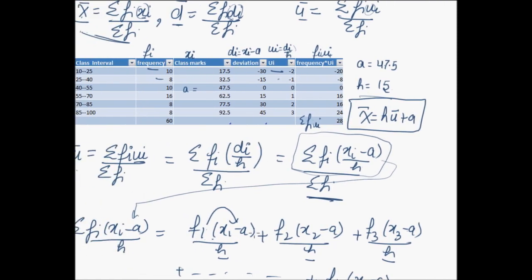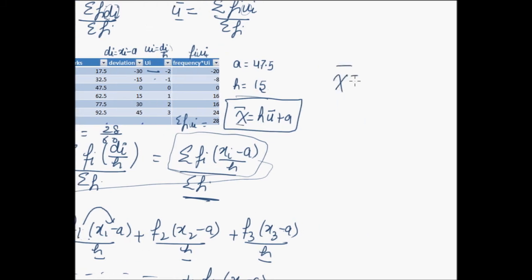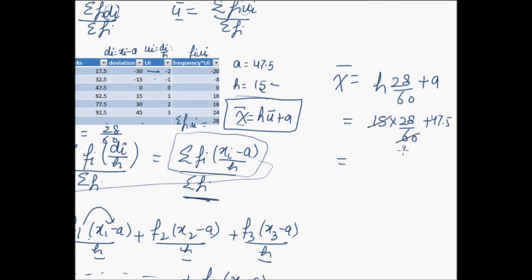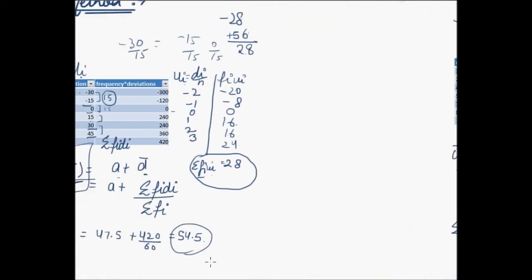So with the simplified version of this table and calculating u bar, that is u bar can be calculated easily as summation fi*ui over summation fi, that is 28 over 60, we can calculate mean. Mean will be x bar equal to h into 28 over 60 plus a. The class size h is 15, into 28 over 60, plus assumed mean which is 47.5. So 15 cancels with 60 giving 4, and 28 divided by 4 is 7. We have 7 plus 47.5 that is 54.5, which is the same result calculated by assumed mean method.